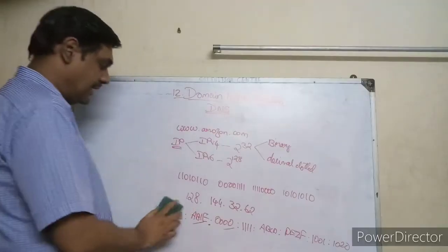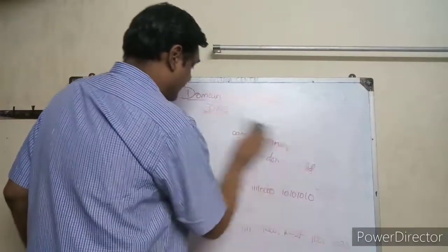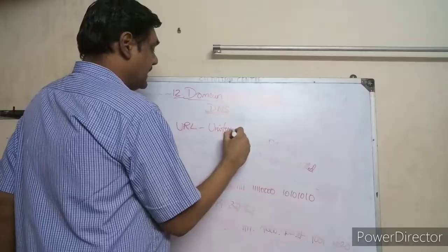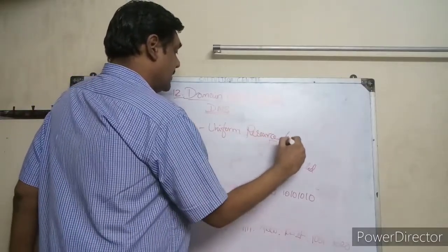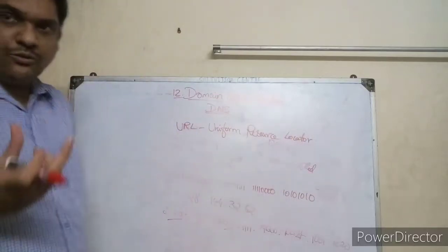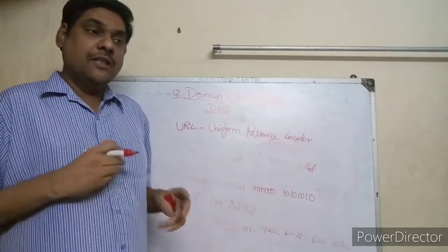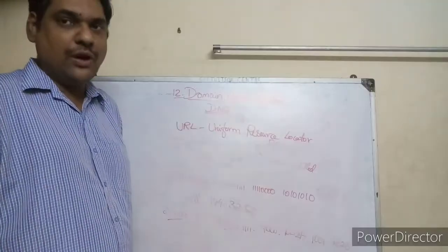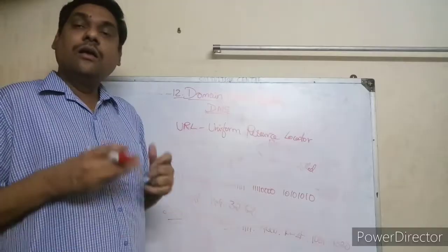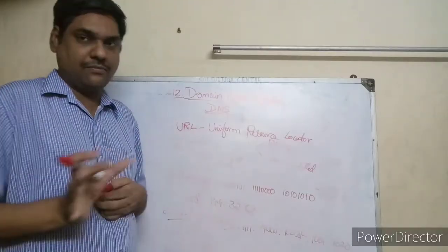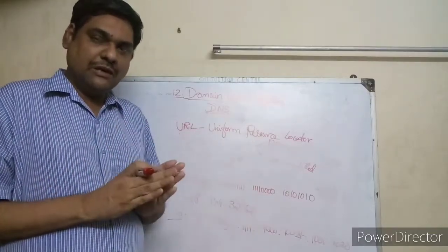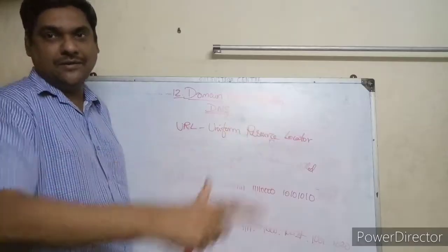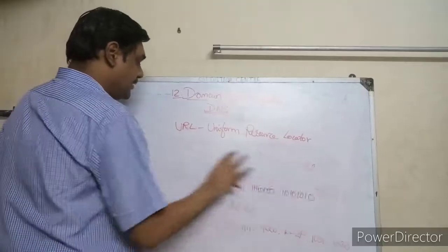Next we are going to see something called URL — Uniform Resource Locator. The URL is the full address of a particular web page on a website. For example, www.amazon.com is the domain name or host name of the website. A website has many web pages, and the domain name is the common name, but the URL is the full address of a particular web page.